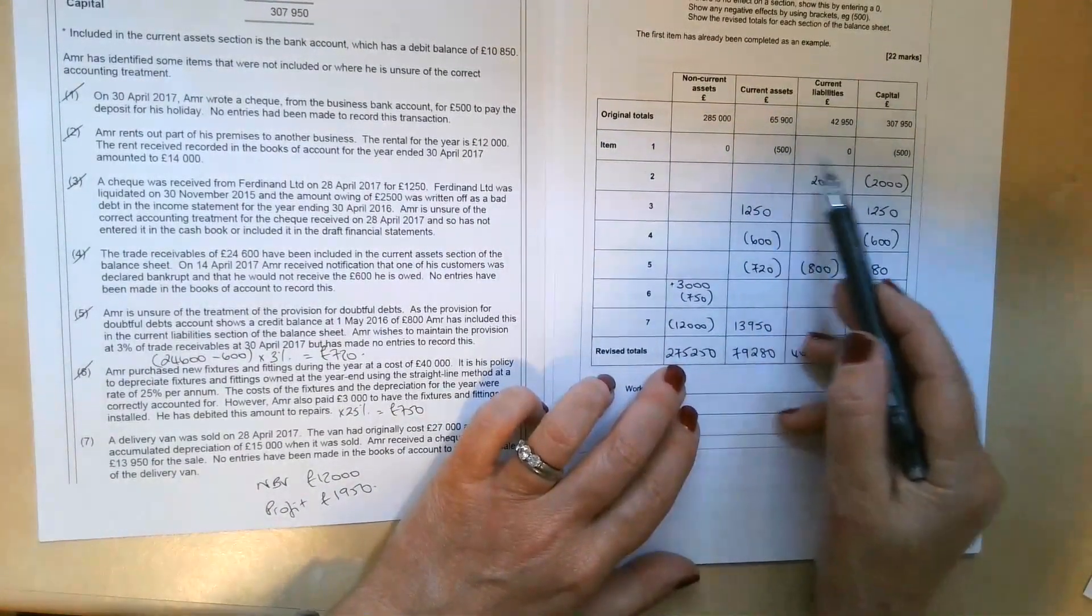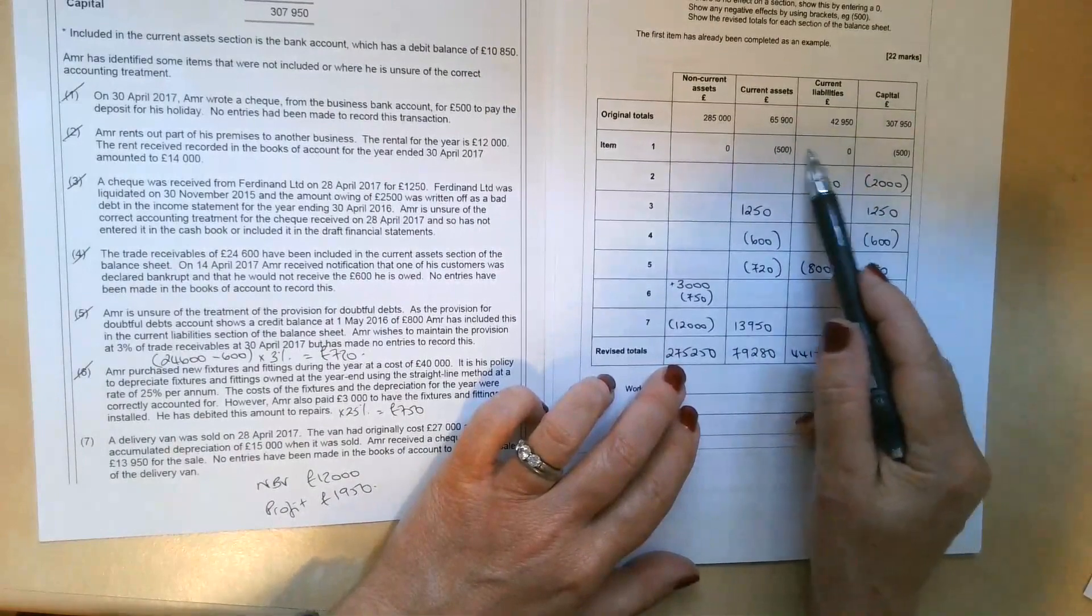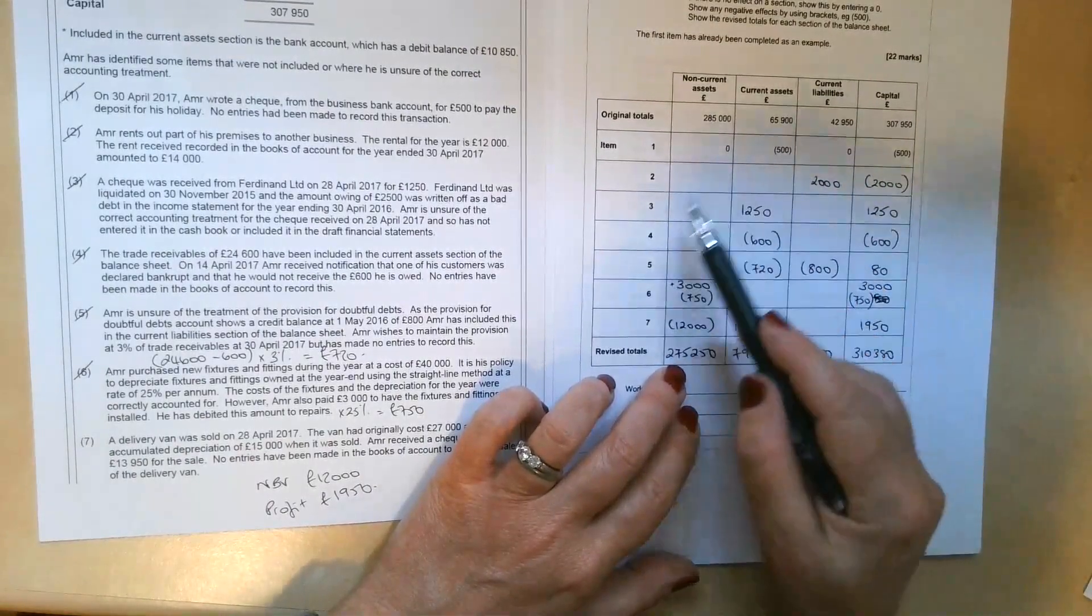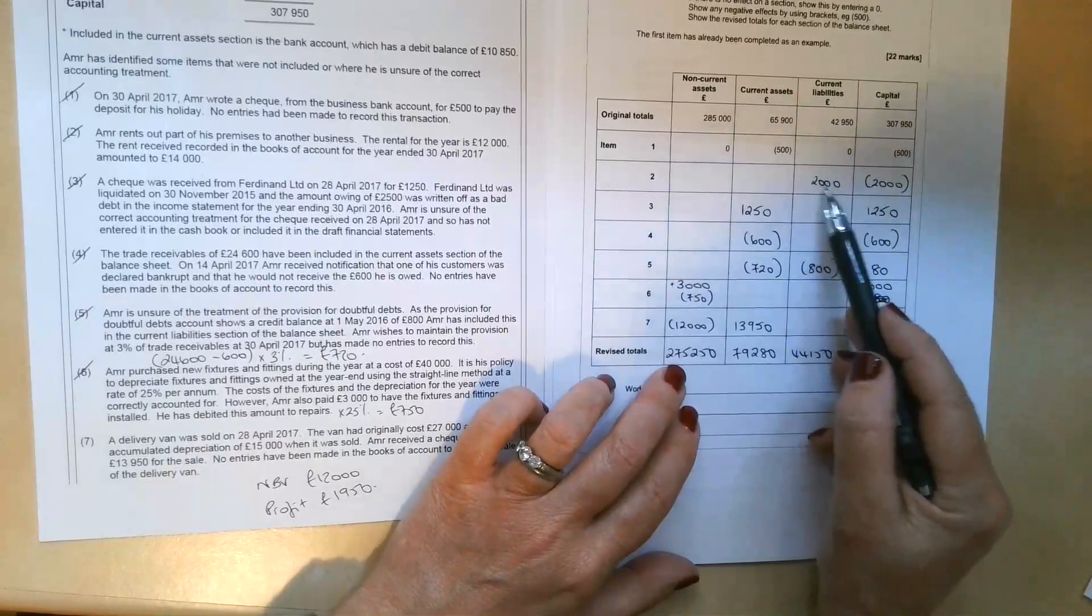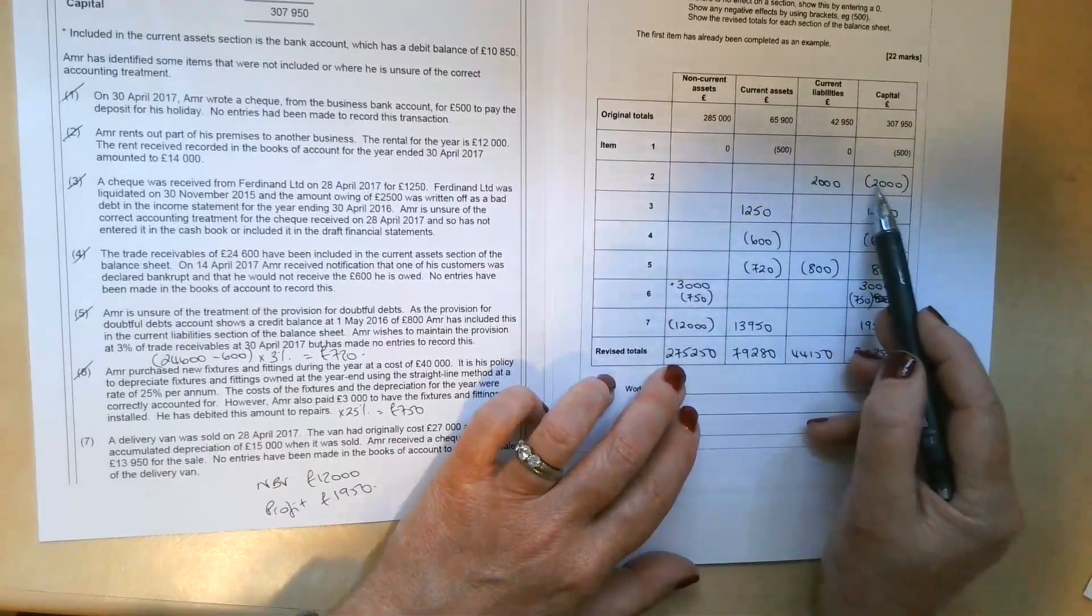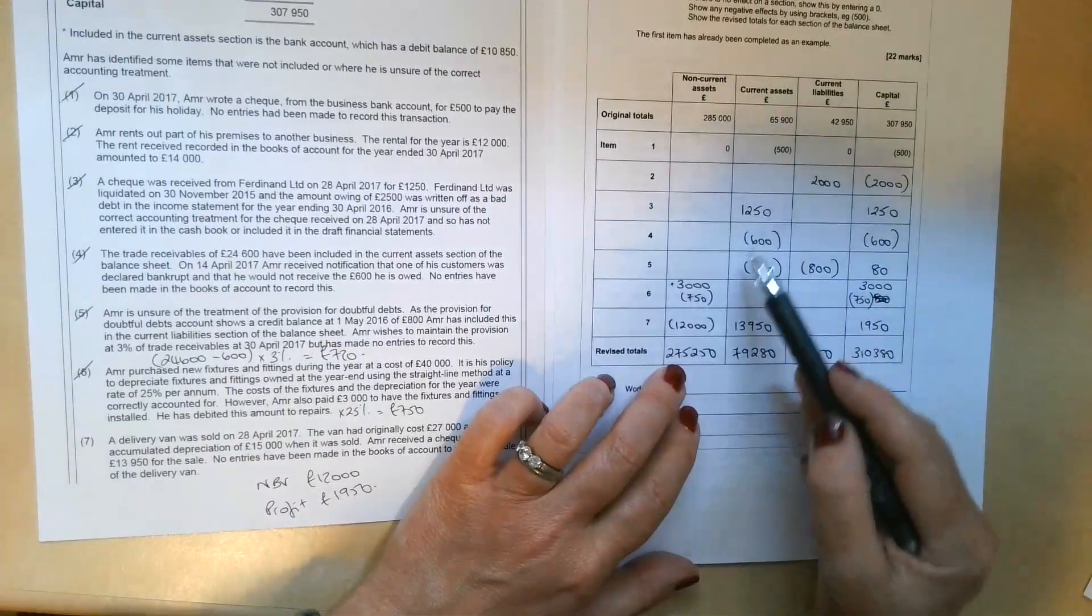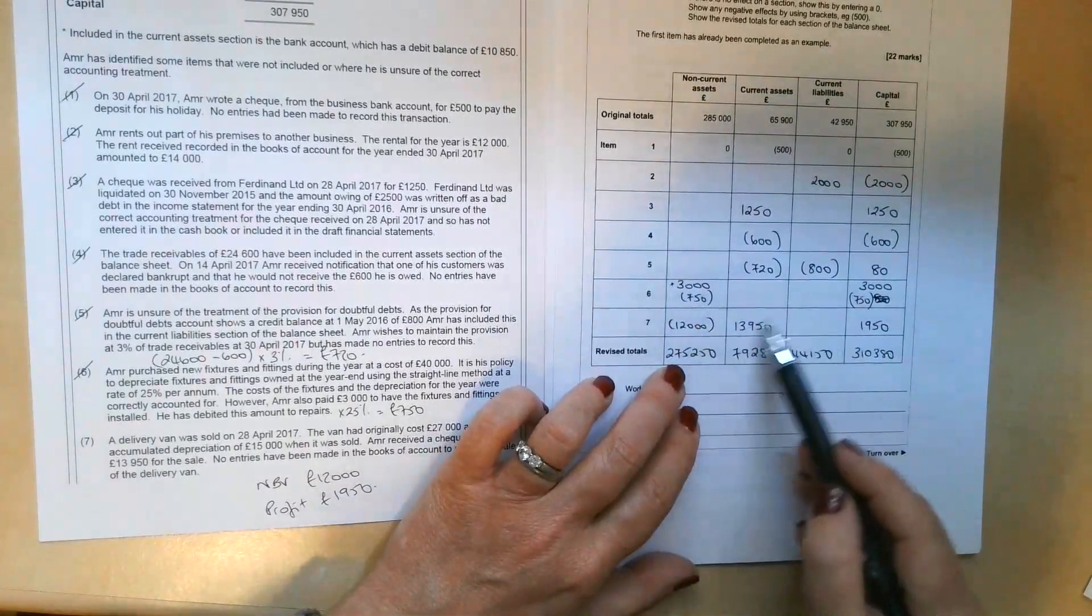And all of these adjustments we've done actually balance in terms of the double entry. So here we've credited current assets, we've debited capital. So the two cancel each other out. So we should find that that's the case all the way along here. We've credited current liabilities, and we've debited capital. So the same applies all the way through here.